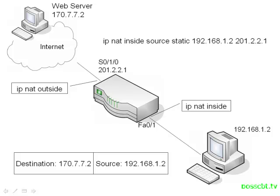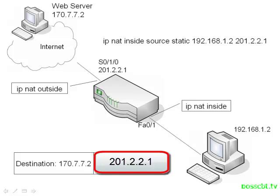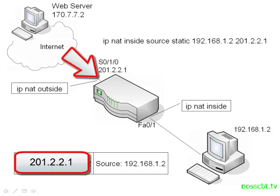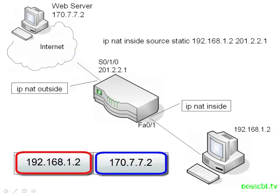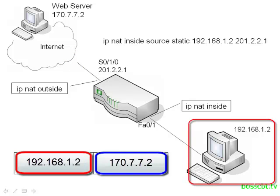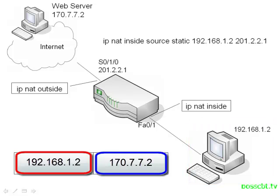Now the router sees this configuration and will change the source IP address from 192.168.1.2 to 201.2.2.1, and the traffic is sent to the web server. When the web server returns traffic, the destination will be 201.2.2.1, because that's what it sourced from. When the router receives that return traffic, it looks at its NAT table and determines that this matches what it translated earlier, so it changes the destination back to 192.168.1.2, leaving the source as the web server so the PC can properly process that packet. Let's jump on the router and make this happen.